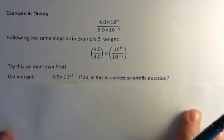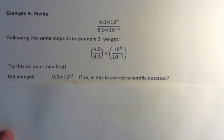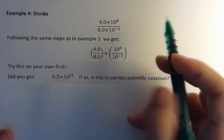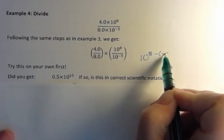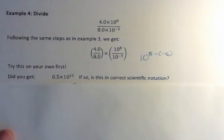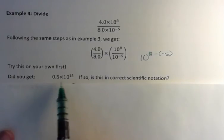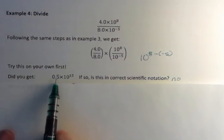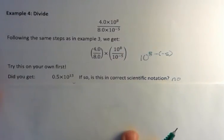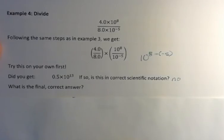You really want to be careful, because this is 10 to the 8th minus negative 5, and you're adding 5 there, so you get 13th. So this should have been where you headed, but it shouldn't have been your last step, because it's not in correct scientific notation, because this number is not between 1 and 10. So what is the final correct answer?